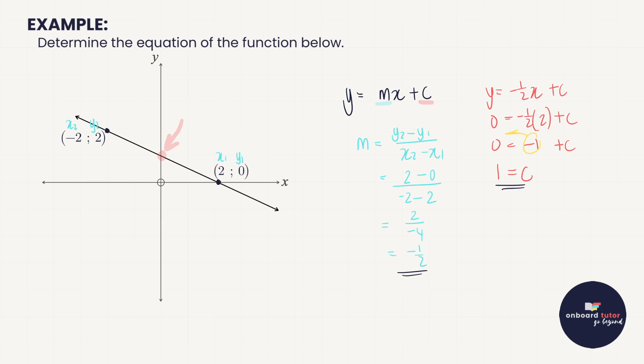Now we have both m and c, so the equation of the line is y = −½x + 1. Let's write that next to the line on the graph.